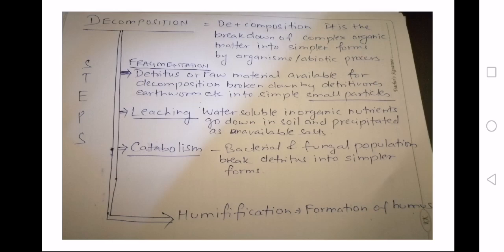Now comes your catabolism part. It is the biochemical process where the bacterial and fungal population can break the detritus into simpler forms so that they can become humus also. That comes under humification. It is a process of the formation of humus. So children, I have discussed here four topics. After humification, mineralization takes place, and mineralization allows the minerals which form the organic matter...